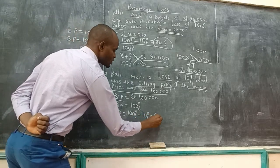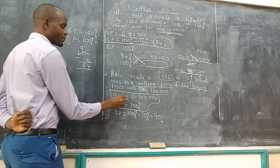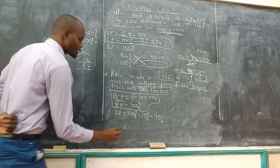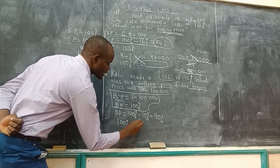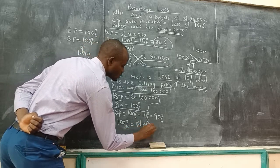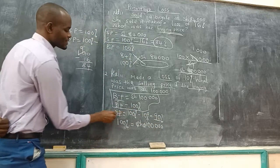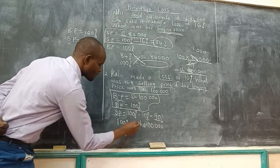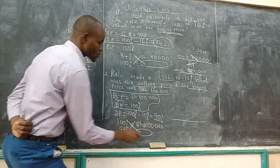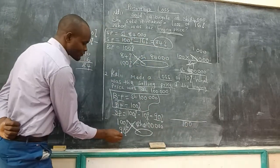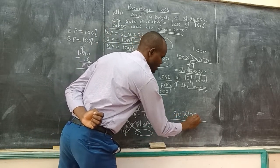So you are getting 90%. We have two quantities which are equivalent. Buying price in percentage, so 100% is equivalent to 100,000 shillings. What about the question asking about the selling price which is 90%? Cross multiply. The number which is cross multiplied to nothing will be 100. Then we have 90% cross multiplied to 100,000.